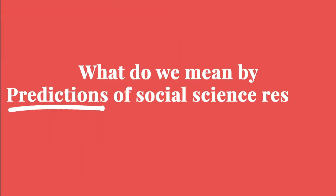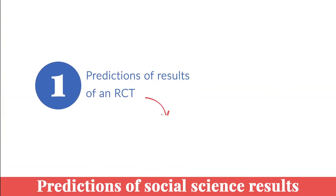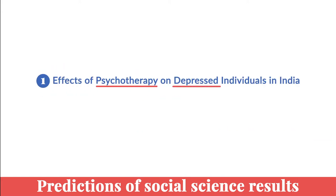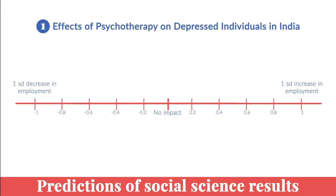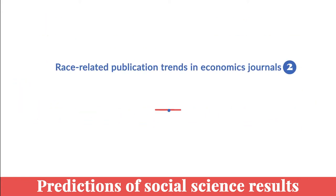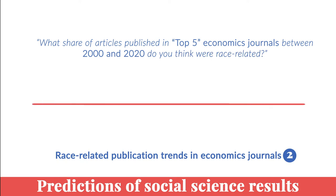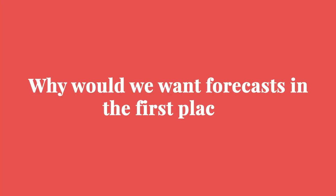So what do we mean by predictions of social science results? In one example, researchers collected predictions of results of a randomized controlled trial looking at the effects of psychotherapy on depressed individuals in India. Forecasters submitted predictions of the effects of this intervention on outcomes like depression and employment. In another example, researchers collected predictions of race-related publication trends in economics journals. These two examples highlight that forecasts can be collected for a diverse range of social science results.